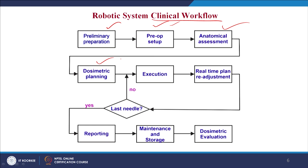Then comes dosimetric planning, done to obtain the desired dose distribution to the organ of interest. The treatment planning system displays the planned isodose contours, needle positions and orientations, and seed locations in user-selected 2D as well as 3D orientations. If required, the clinician can edit the plan accordingly. Then comes execution: once the radiation oncologist approves the plan, the needles are inserted into the patient according to the plan.